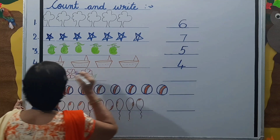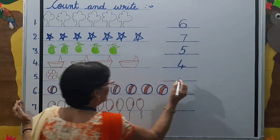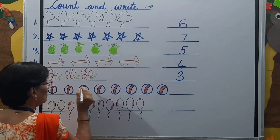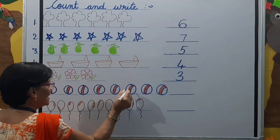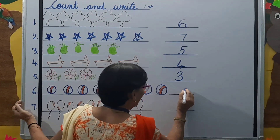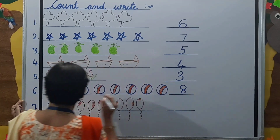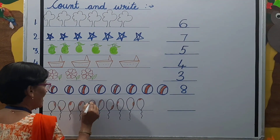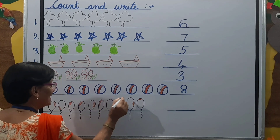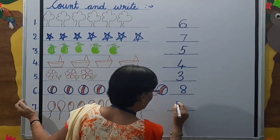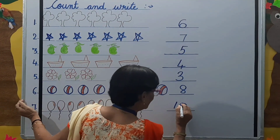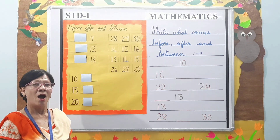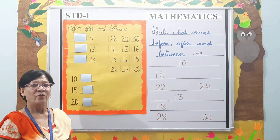1, 2, 3 — 3 flowers. 1, 2, 3, 4, 5, 6, 7, 8 — 8 balls. 1, 2, 3, 4, 5, 6, 7, 8, 9, 10 — 10 balloons. Now moving on to our next topic: Before, After, and Between, which you have already learnt in UKG.